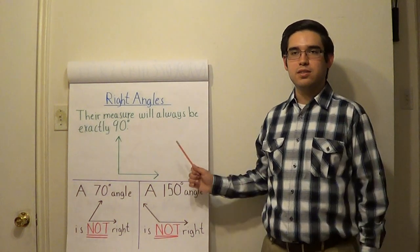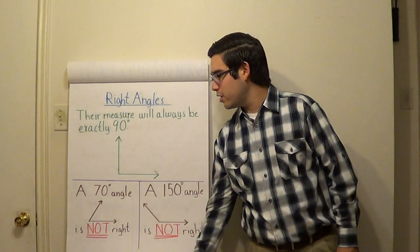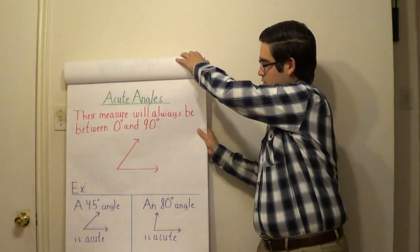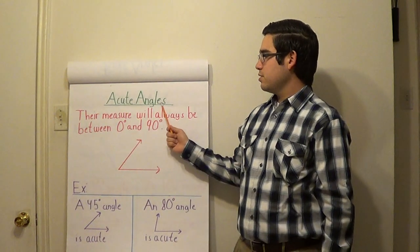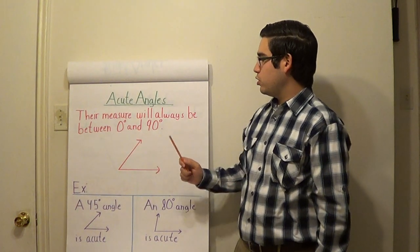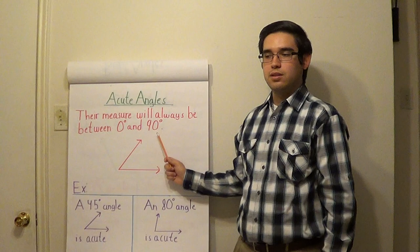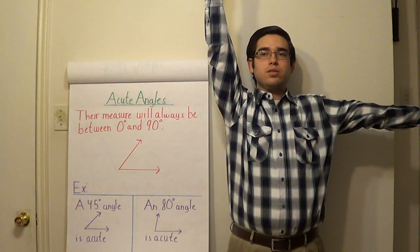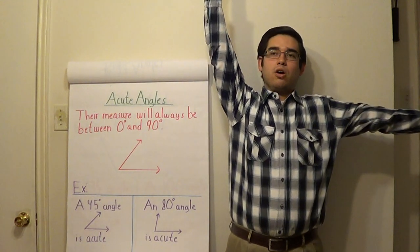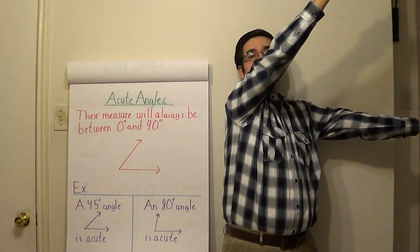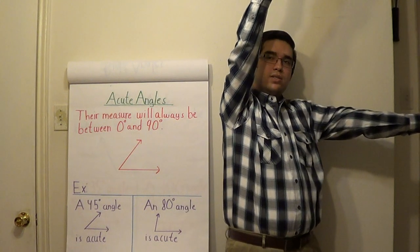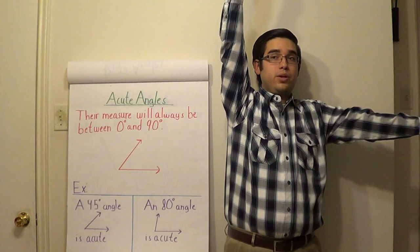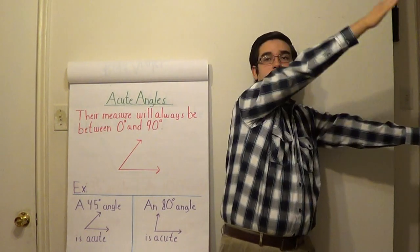Any questions class? Okay, good. Now let's consider acute angles. Acute angles have the property that their measure will always be between 0 degrees and 90 degrees. A right angle is where your left arm points directly outward and your right arm points directly upward. An acute angle would be one where your right arm is slanted towards the left — something like this would be an acute angle. So long as it's somewhere within this range, then what you have is an acute angle.